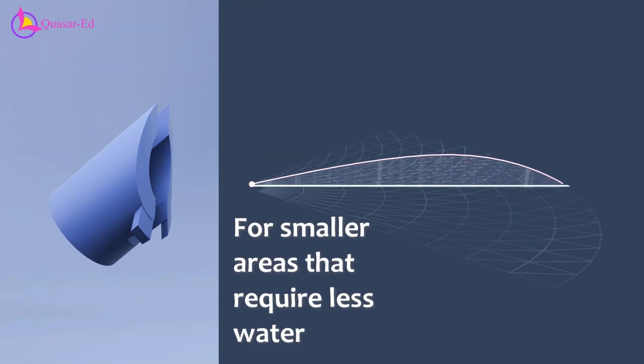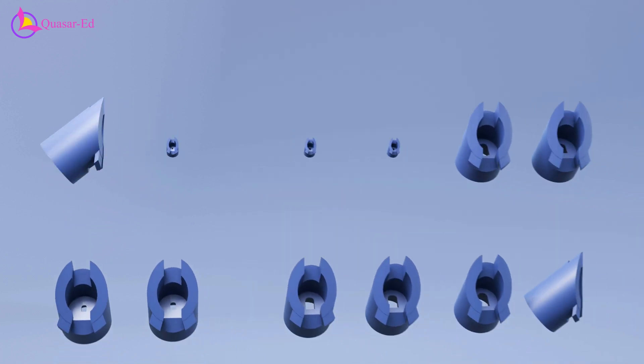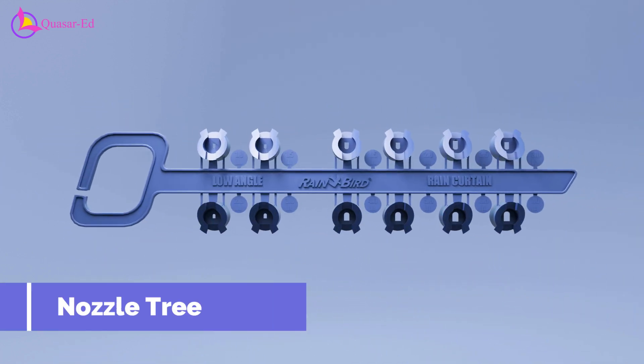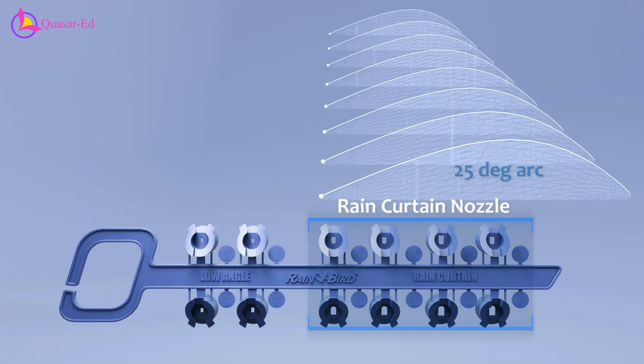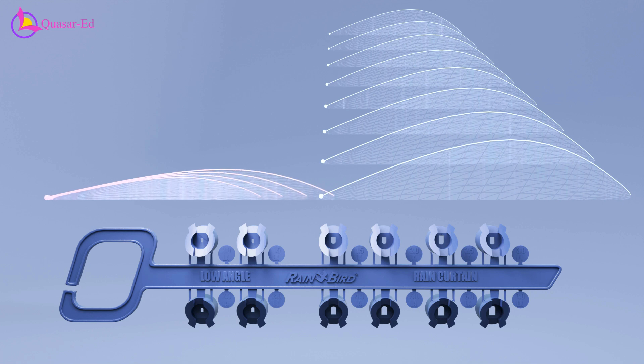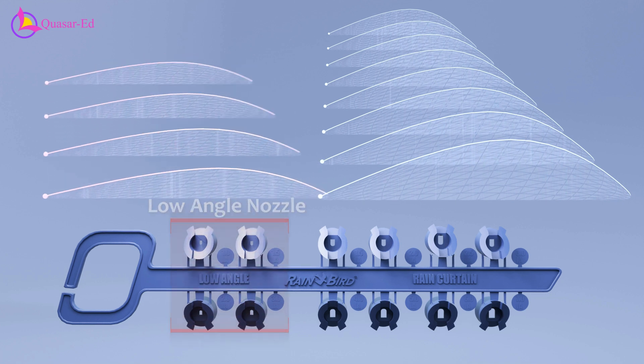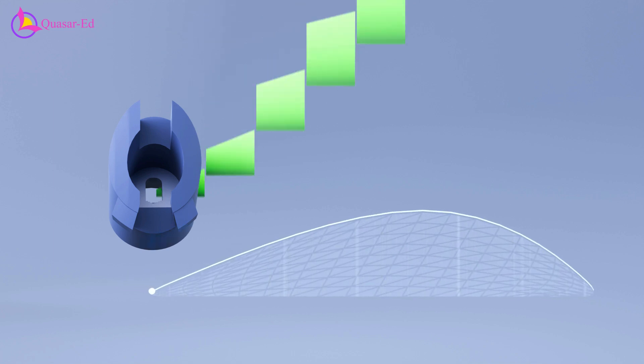While smaller nozzles are suited for smaller areas with finer droplets, the nozzles are often provided together as a nozzle tree. In this Rainbird model, the tree includes eight rain curtain nozzles producing a 25-degree arc and four low-angle nozzles with a 10-degree arc.